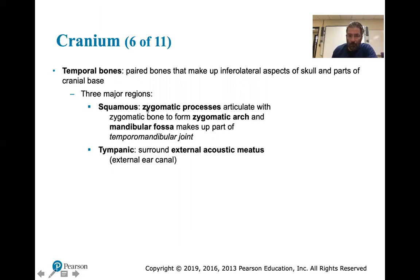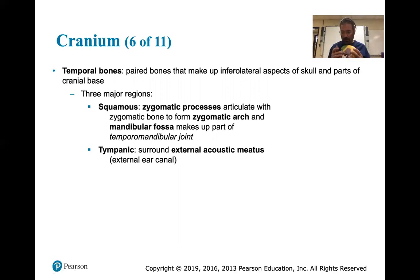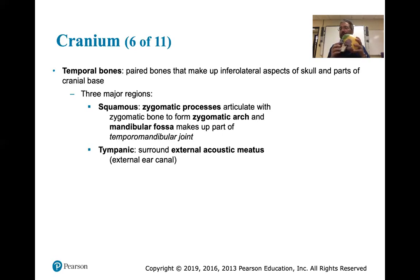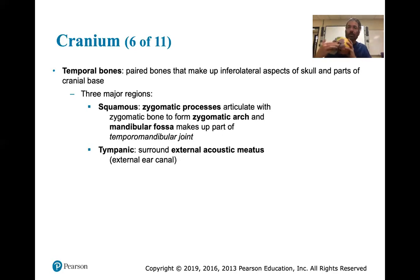The squamous zygomatic process articulates with the zygomatic bone to form the zygomatic arch and the mandibular fossa. When temporal and zygomatic bones come together they form a specifically named joint. If someone broke the zygomatic arch in a car accident, the name tells you exactly where it is. There's the temporal mandibular joint, TMJ - some people have problems with that.